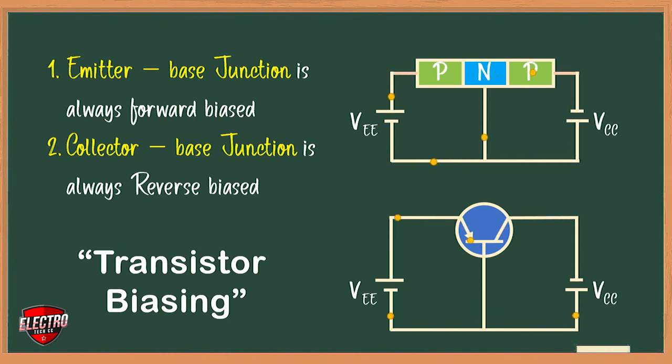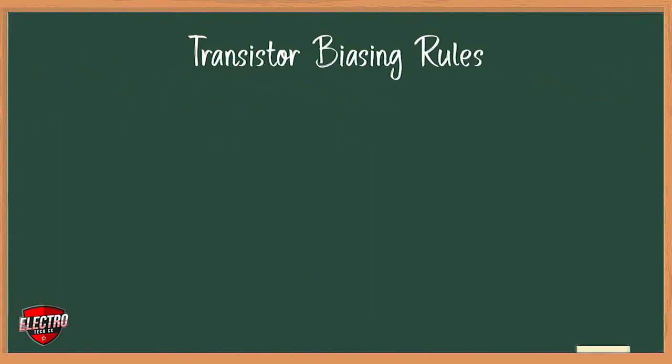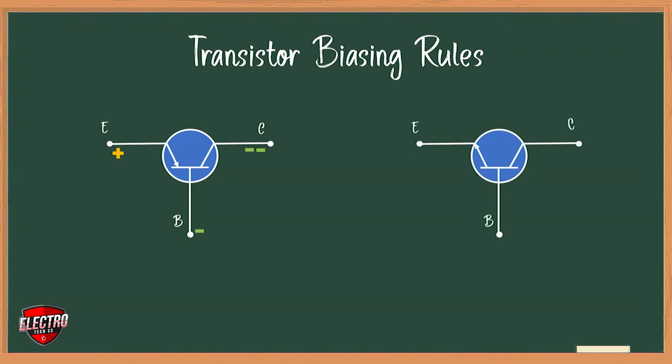Now let us discuss the important rules of biasing. For NPN transistor, both collector and base are negative with respect to emitter, and collector is more negative than base. Similarly, for PNP transistor, both collector and base are positive with respect to emitter, and collector is more positive than base.